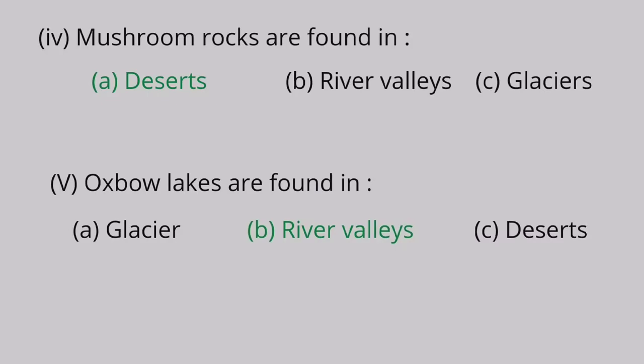Question 5: Oxbow lakes are found in A. Glaciers, B. River valleys, C. Deserts. Oxbow lakes are found in river valleys.